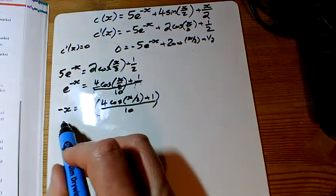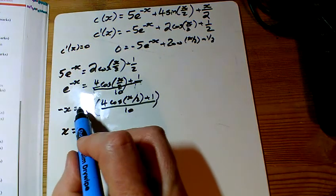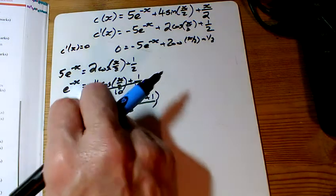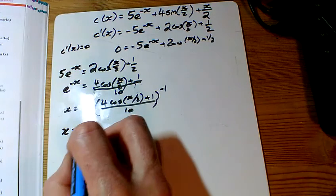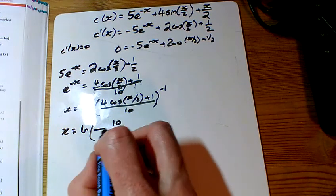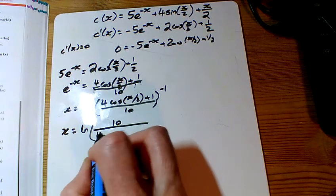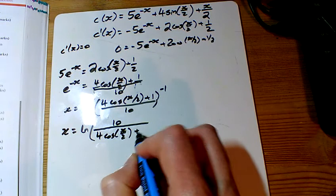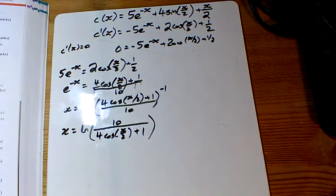And x is equal to, so if I divide both sides by minus 1, we've got a minus outside a ln. It means it's to the power of minus 1. And that's how they then flip the fraction over. 10 over 4 cos x over 2 plus 1. There's the first rearranging.